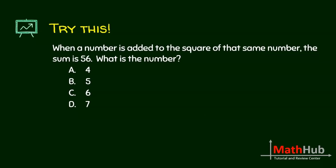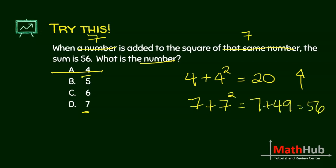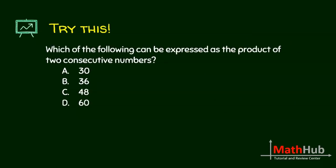When a number is added to the square of that same number, the sum is 56. What is that number? Let's try 4: 4 added to the square of 4 is 4 plus 16, which is 20 — too small, need to go up. Let's try 7: 7 plus 49 equals 56. So the answer is 7.